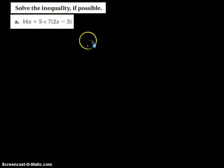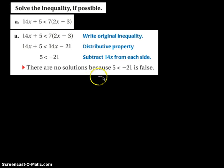Here's an inequality. Let's solve it if possible. What they did here is the original inequality, then they did the distributive property. You should be able to see right away you have 14 X's on both sides. If you subtract those and get rid of them, you have 5 that's less than negative 21. Well, that's just not true. So there are no solutions because this statement is false. There's nothing you can plug in here to make this true.